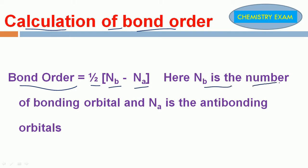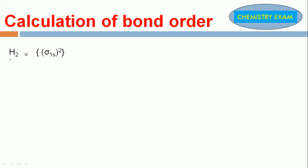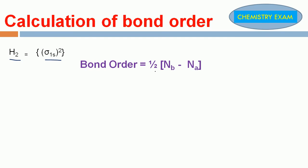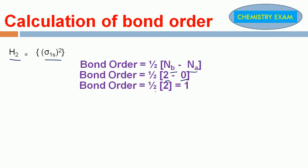NB is the number of bonding orbitals and NA is the number of anti-bonding orbitals. First, the hydrogen molecule, H₂. What is the electronic configuration? Sigma 1s². Bond order is 1/2 (NB minus NA). Bonding electrons is 2, anti-bonding electrons is 0. It is equal to 1/2 into 2, which equals 1. The bond order for hydrogen molecule is 1.